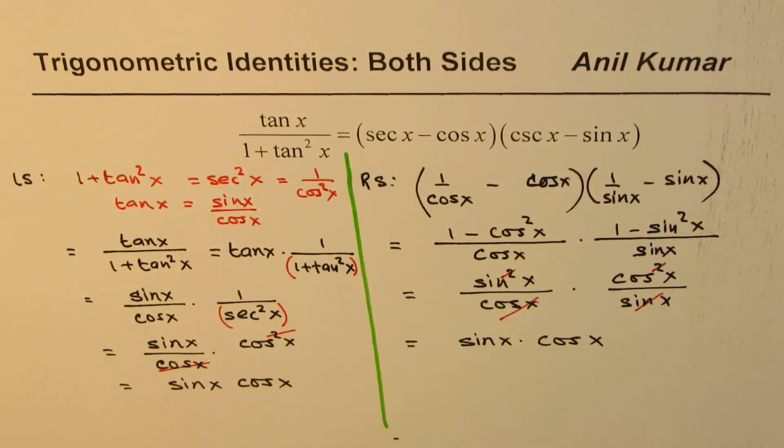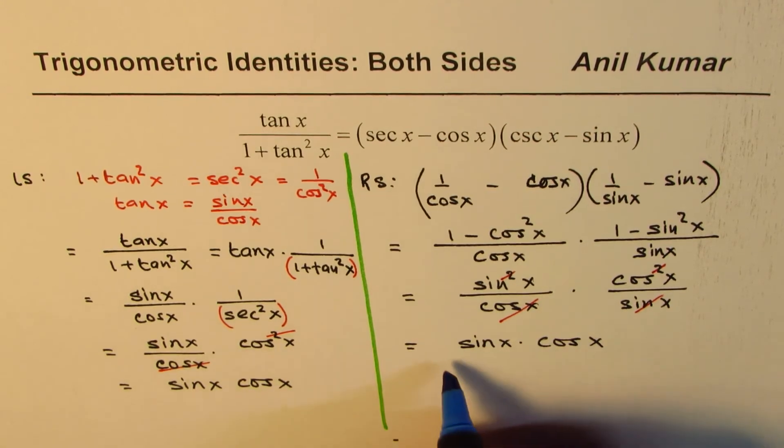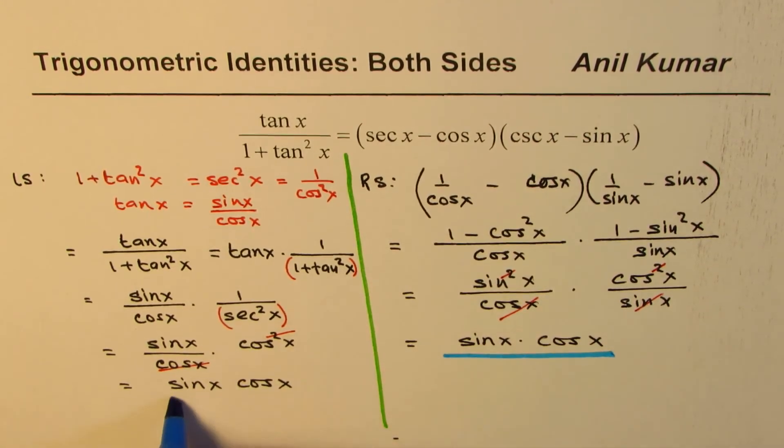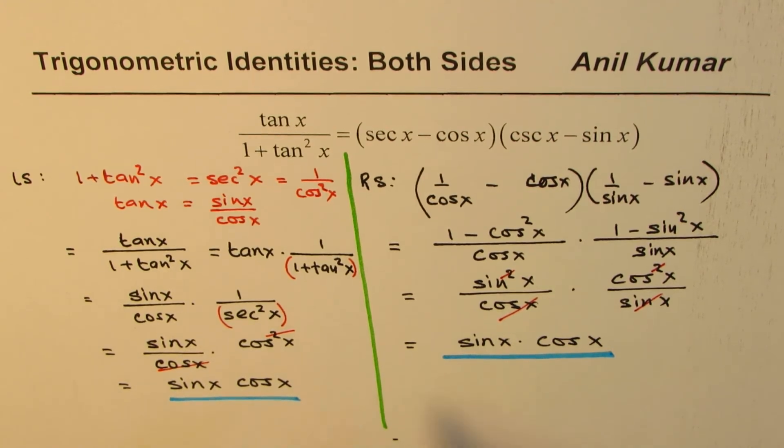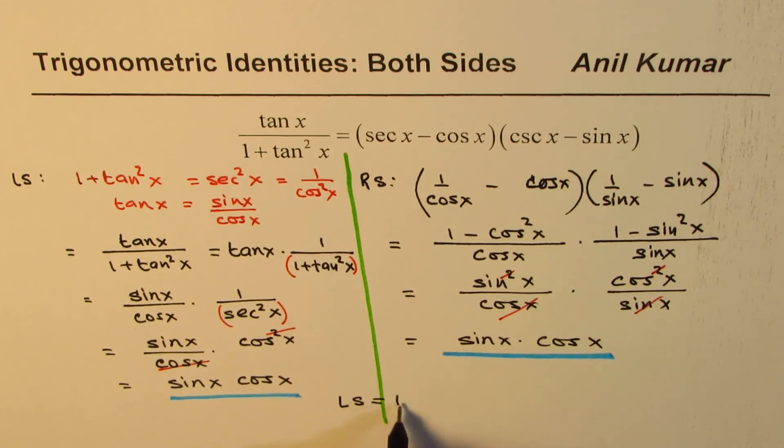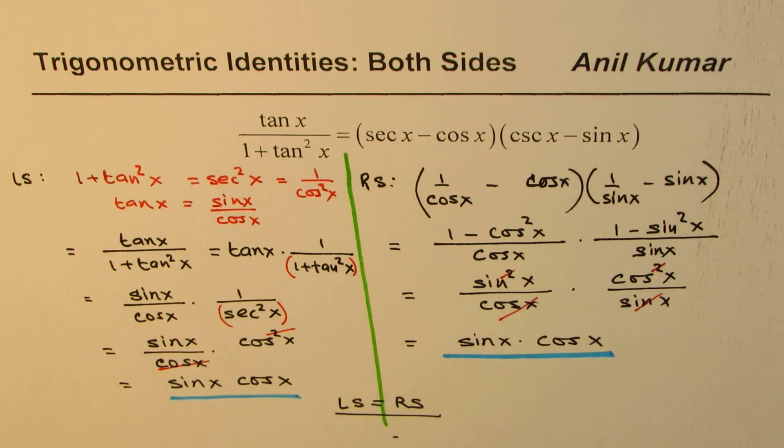That means left side is equal to right side, and therefore this identity has been proven. So I think solving both sides in such examples is very helpful.